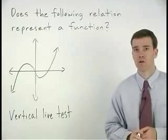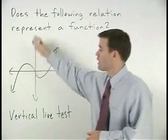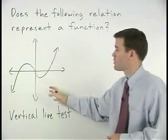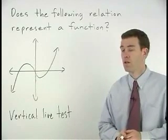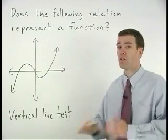In other words, if we can draw a vertical line that passes through more than one point on the graph, then the relation is not a function.